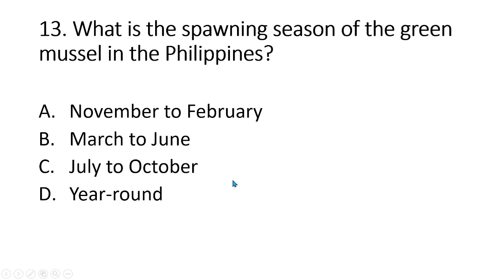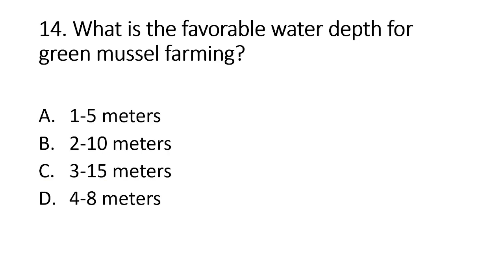Number 13. What is the spawning season of the green mussel in the Philippines? A. November to February. B. March to June. C. July to October. D. Year-round. The answer is letter D, spawning is year-round with peaks during April to May, then September to October. Number 14. What is the favorable water depth for green mussel farming? A. 1–5 meters. B. 2–10 meters. C. 3–15 meters. D. 4–8 meters. The answer is letter B, mussel farming is usually carried out at 2–10 meters deep waters.